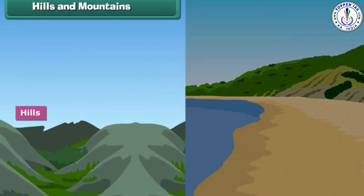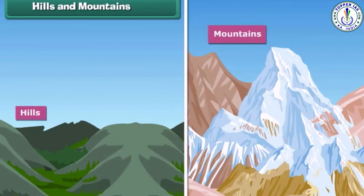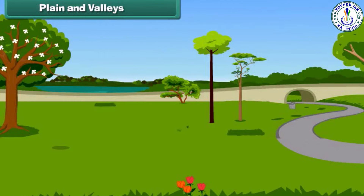Friends, hills and mountains are naturally raised parts of the Earth's surface. But now look here carefully. You will notice that a hill is smaller than a mountain.